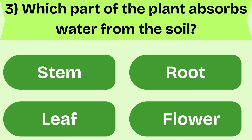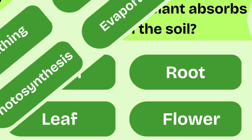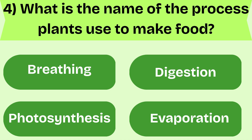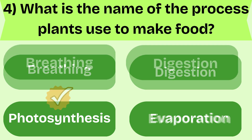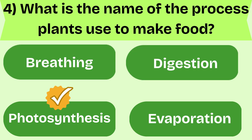Which part of the plant absorbs water from the soil? Roots, you are correct. Try the next one. What is the name of the process plants use to make food? Photosynthesis. Great answer. Here comes the next one.